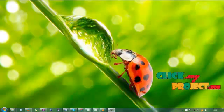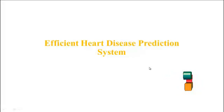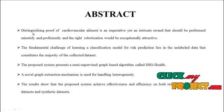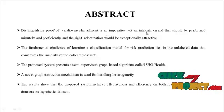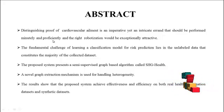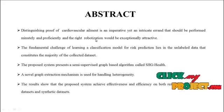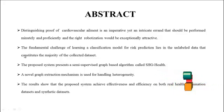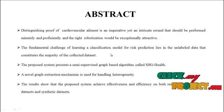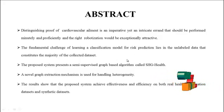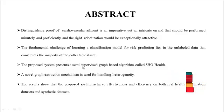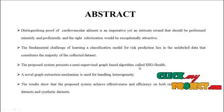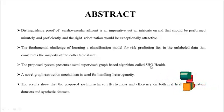Welcome to ClickMeProject.com. This is our project titled the Efficient Heart Disease Prediction System. The identification of cardiovascular elements is an important yet complex task that should be performed minutely and efficiently, and the right automation would be exponentially attractive. The fundamental challenge of learning a classification model for risk prediction lies in the unlabeled data that constitutes the majority of collected datasets. The proposed system presents a semi-supervised graph-based algorithm called SCH Health.